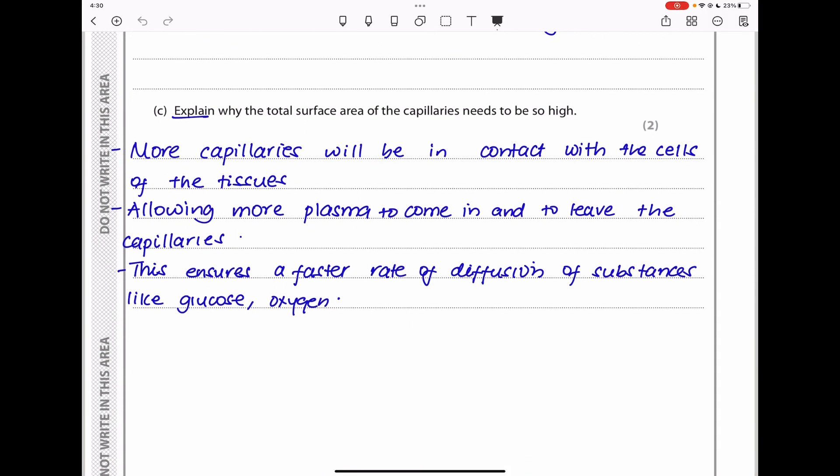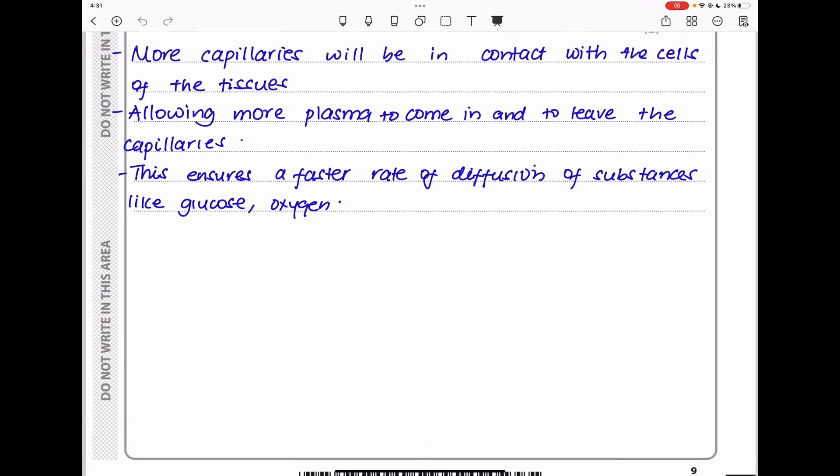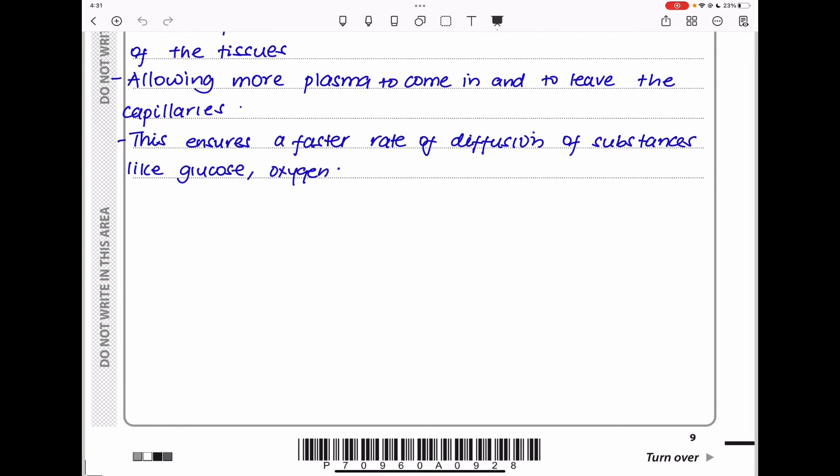Explain why the total surface area of capillaries needs to be so high. Capillaries have to be more. More capillaries will be in contact. If the total surface area is large, it means more capillaries will be in contact with the cells of the tissues, allowing more plasma to come in. It's the plasma that comes in and leaves the capillaries. This ensures a faster rate of diffusion of substances like oxygen, glucose, as well as CO2, if it's coming out of the cells, to be taken away in order for the cells to perform respiration.